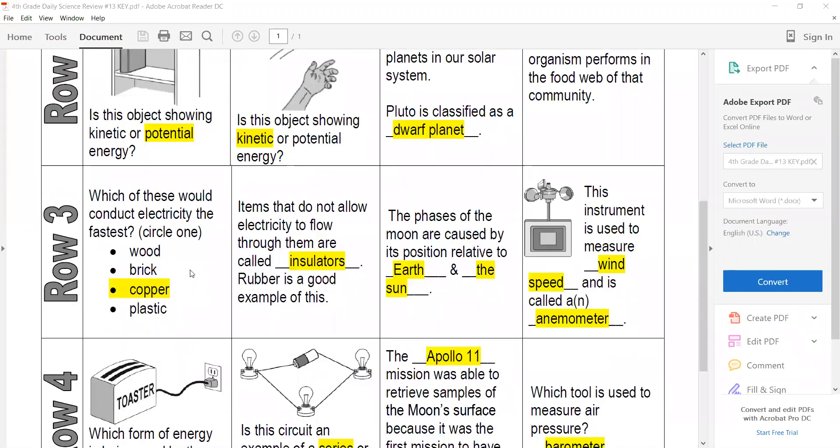Copper is good for conducting electricity - it's going to be the fastest. Items that do not allow electricity to flow through them are insulators. Rubber is a very good example of insulators. That's why electricians wear rubber gloves.